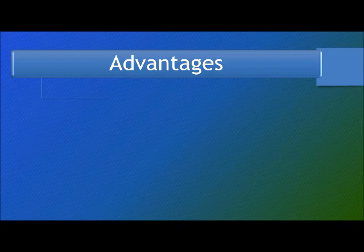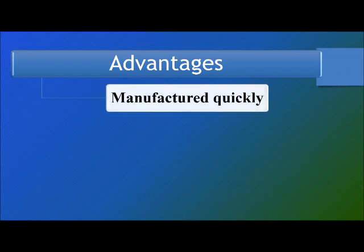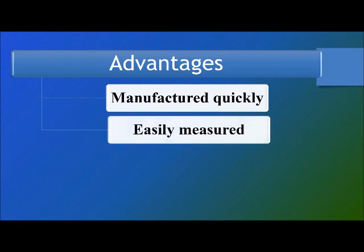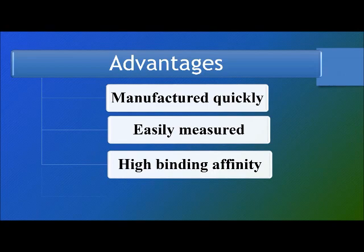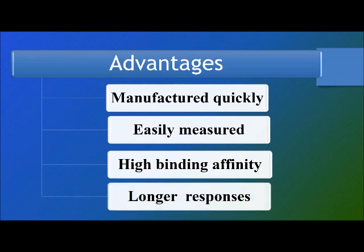Antisense drugs have the following advantages: firstly, their oligonucleotides may be manufactured very quickly; secondly, the potential sensitivity to therapy may be easily measured; thirdly, there is potential for enhanced binding affinity to the target; and lastly, the potential to produce longer-lasting responses.